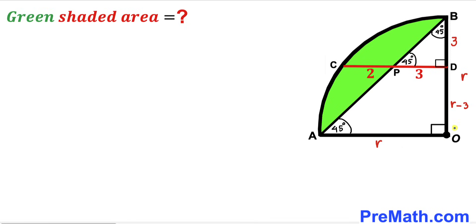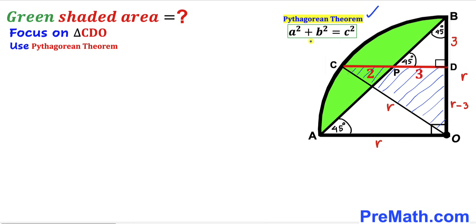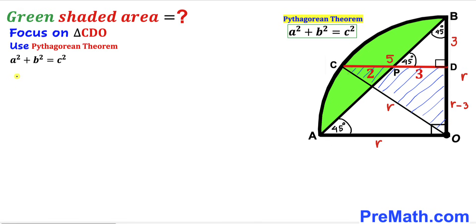In the next step, I'm going to connect center O with point C. Segment OC is the radius of the quarter circle, so I'll label it lowercase r as well. Now let's focus on right triangle CDO and apply the Pythagorean theorem: a² + b² = c². The hypotenuse is r, one leg is r minus 3, and the other leg CD is 2 plus 3 equals 5 units. So we get (r − 3)² + 5² = r².